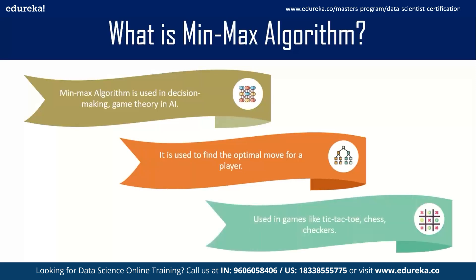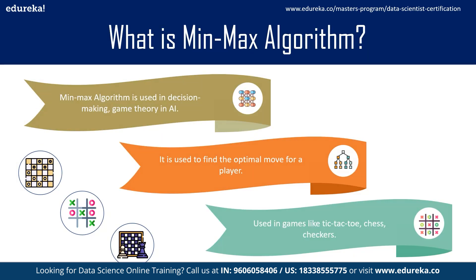It is used in games like tic-tac-toe, chess, checkers and so on. These are board games or strategic games where two players are involved, and MinMax algorithm is used to find the best or the optimal move that the artificial intelligence should make in order to win the game. So now let us take tic-tac-toe and understand how the MinMax algorithm finds the best move.